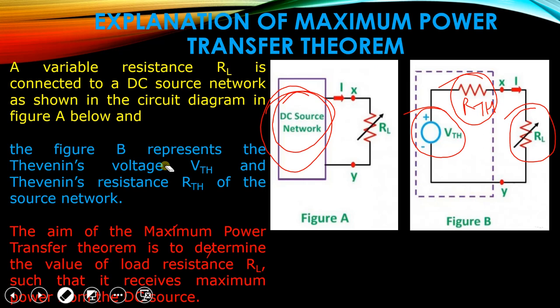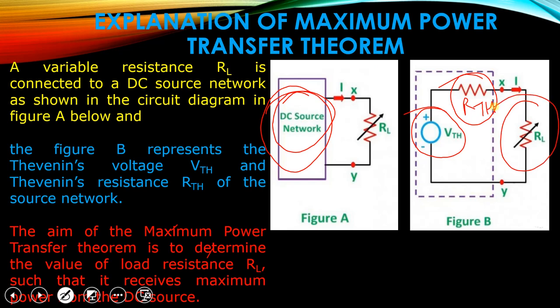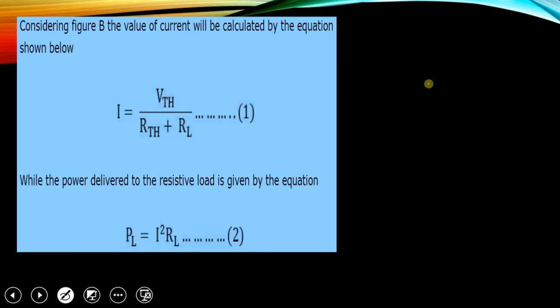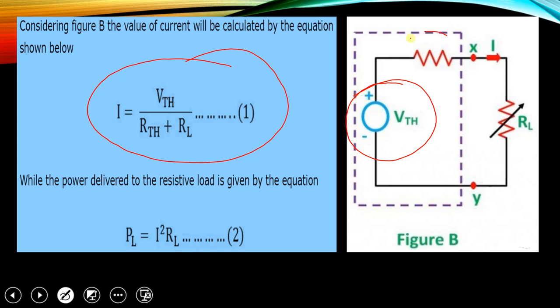The aim of the Maximum Power Transfer Theorem is to determine the value of load resistance RL such that it receives maximum power from the DC source. When applying the theorem, the motive is that this load resistance will receive maximum power from the circuit. Considering this figure, we find the value of current I, which is given by Vth divided by Rth plus RL.